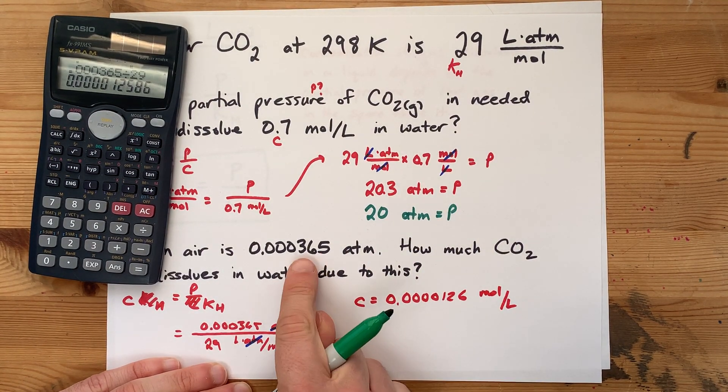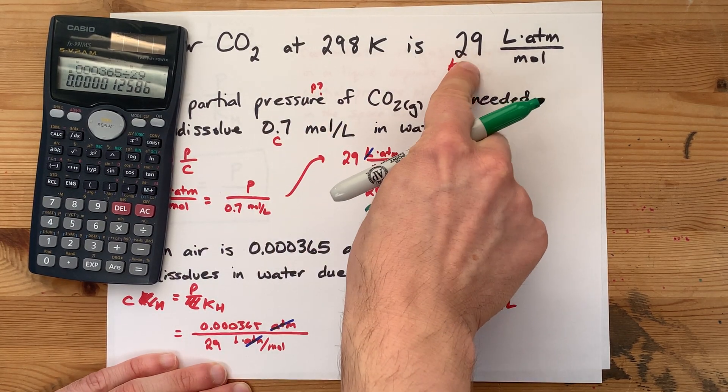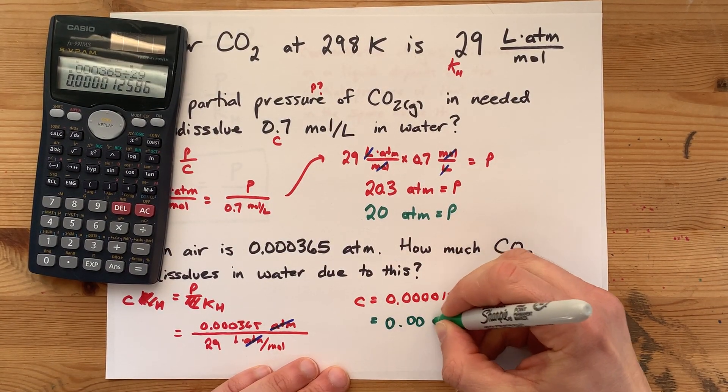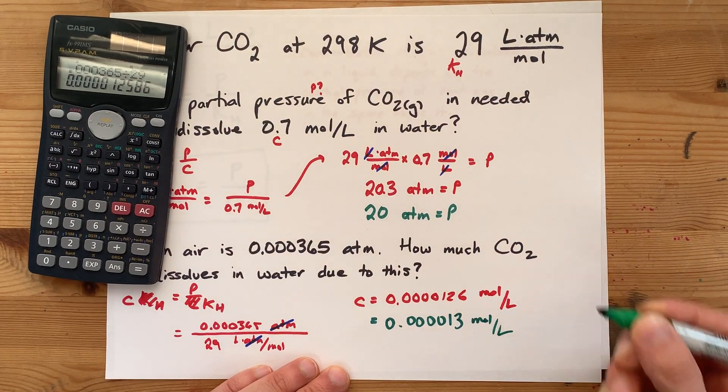I'm just going to do sig figs quickly. There's three significant figures here. We didn't use that number. That was a different question, and that was two significant figures. So I have to round this to two significant figures as well. That's one three moles per liter.